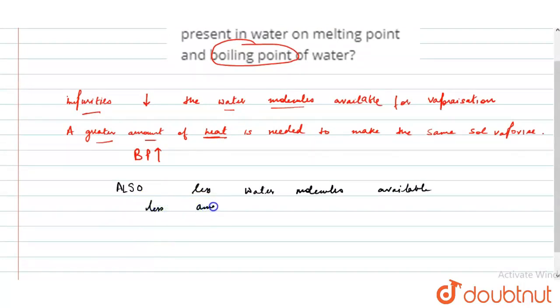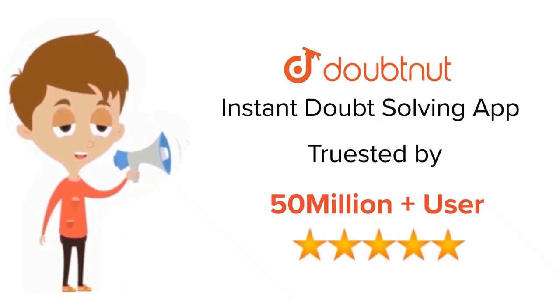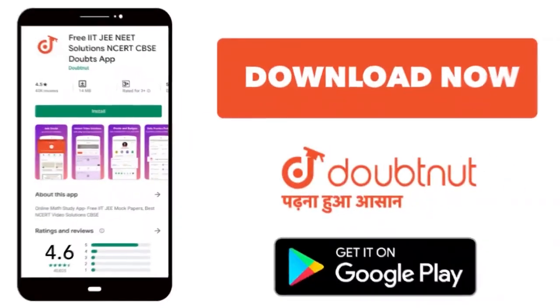Less amount of heat is required to melt. Hence, melting point decreases. Thank you, class. For class 6th to 12th, up to IIT-JEE and NEET level, trusted by more than 5 crore students. Download Doubtnet app today.